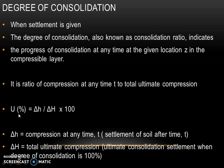So, U in percentage can be written as equal to delta small h divided by delta capital H into 100. Delta small h is the compression at any time t, also known as settlement of soil after time t. Delta capital H is the total ultimate compression, also known as ultimate consolidation settlement when degree of consolidation is 100%.